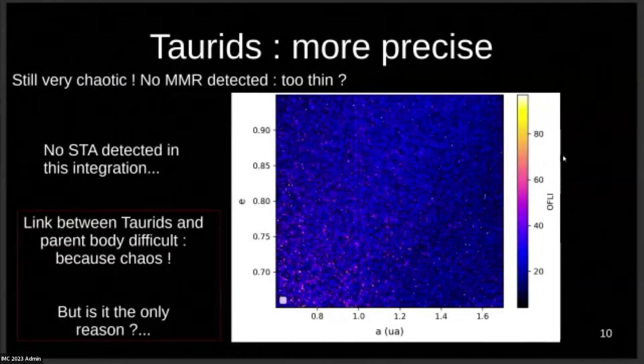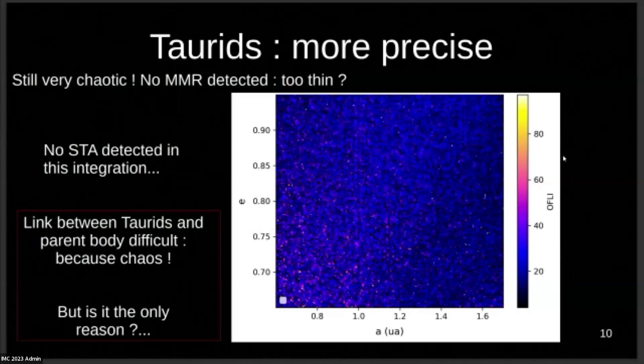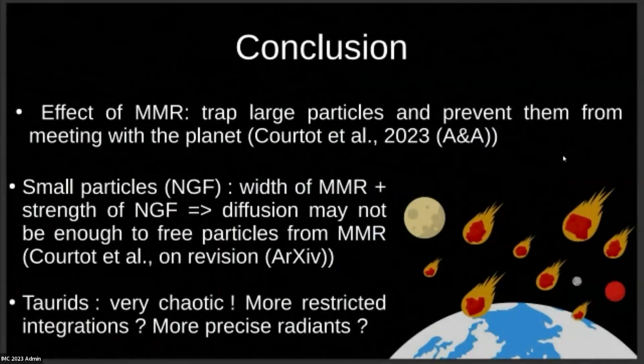In the end, with this map, I actually can say that the link between the Taurids and its hypothetical parent body is difficult because of chaos. It definitely has played a big role. But I'm wondering if there's another reason. For now, because my maps are not more precise, I can't be more precise in my answer.